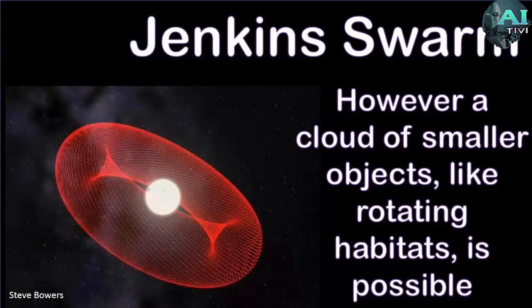Dyson swarms are also a little bit unstable so we also will occasionally talk about a Jenkins swarm which is sort of a very large donut around the star of various swarm objects rotating bodies. These don't follow circular orbits though, they follow a slightly elliptical path that brings them a little bit closer and further away from the sun and you'd probably use that to simulate your seasons.